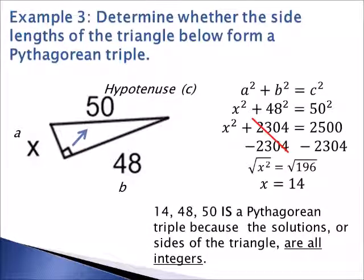So the side lengths of this triangle are 14, 48, and 50, which is a Pythagorean triple because they are all integers.